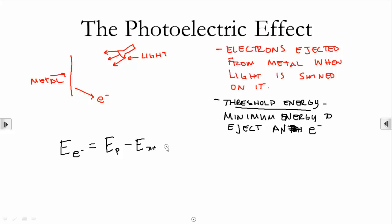Now, our caveat that goes along with this, if the energy of the electron is negative, it's not ejected. All that means is the energy of our photon has to be bigger than our threshold energy.